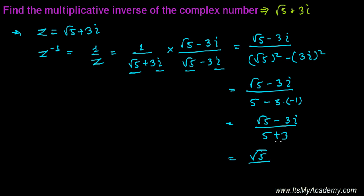So it's root 5 divided by 8 minus 3i divided by 8. This is the multiplicative inverse of the complex number Z, which equals root 5 plus 3i.